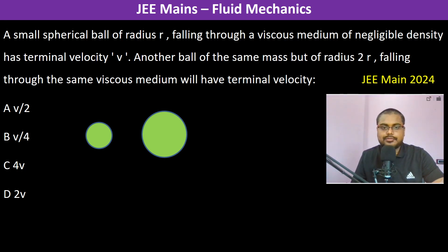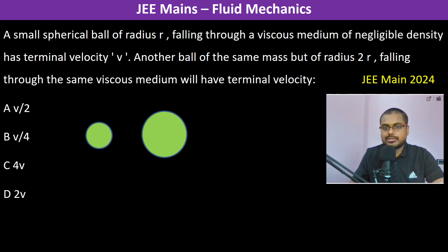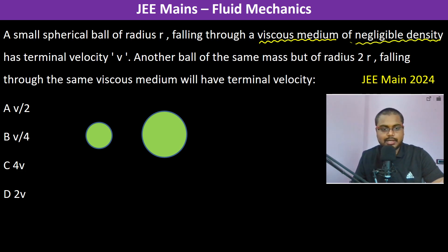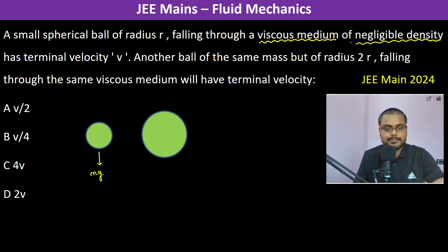A small spherical ball of radius r is falling through a viscous medium of negligible density and has terminal velocity V. For this ball, the force acting downwards is mg, and there is an air drag force which is 6π η r V.